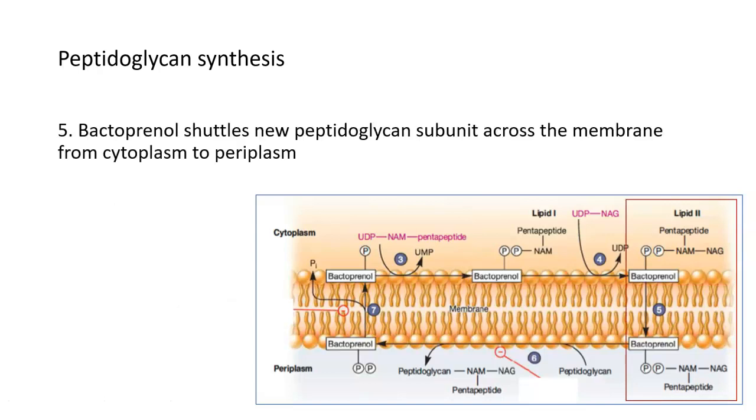And so in the next step, bactoprenol basically flips this subunit from the inside of the bacterial cell to the outside. And so now you can see the peptidoglycan subunit is no longer in. It's actually hanging out to where the cell wall would be.